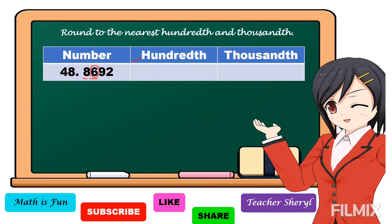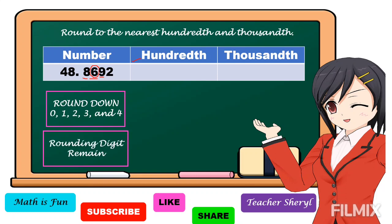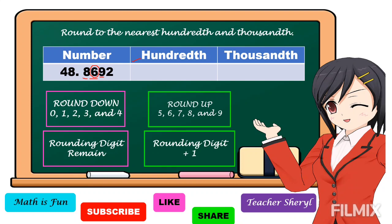Then we're going to look at the right side of 6, which is equal to 9. We need to know if the right-side digit is a round-down or round-up digit. Round-down digits are 4 and below: 0, 1, 2, 3, and 4 — the rounding digit stays the same. But if the right side of the rounding digit is a round-up digit — 5, 6, 7, 8, and 9 — then the rounding digit is increased by 1.